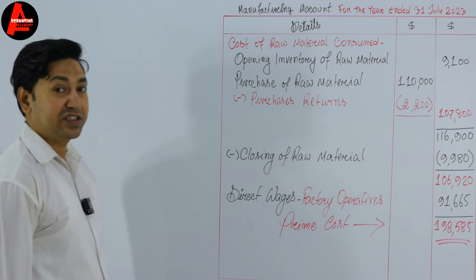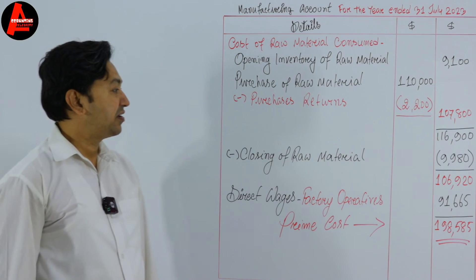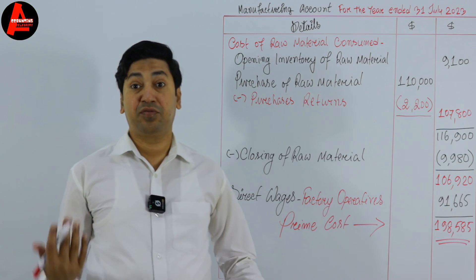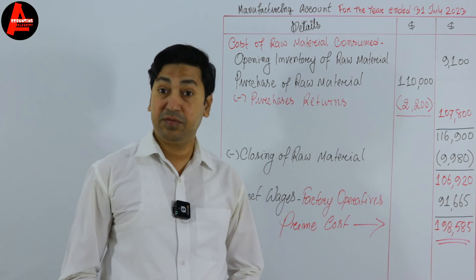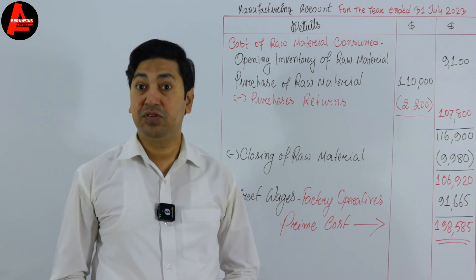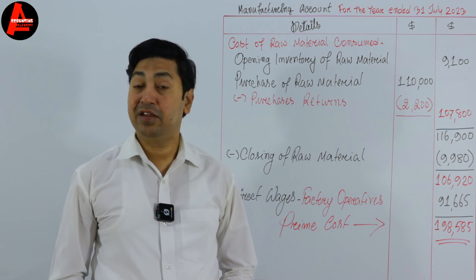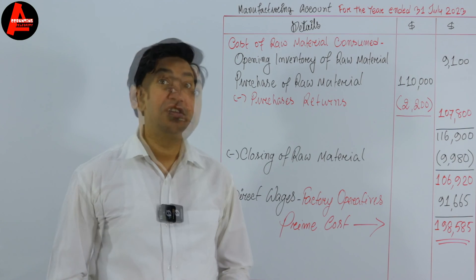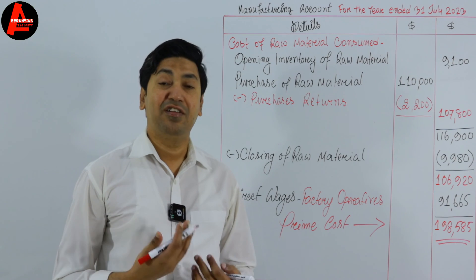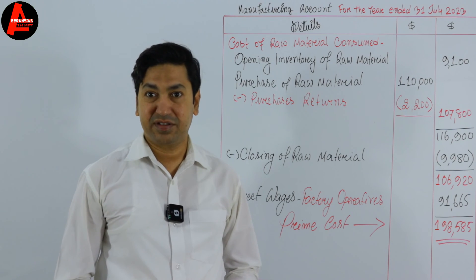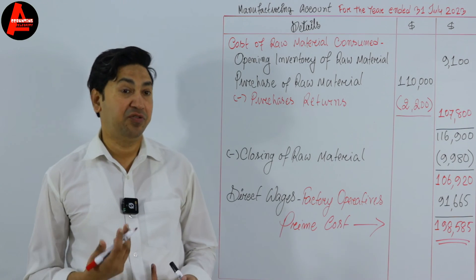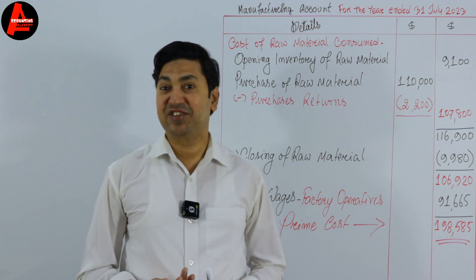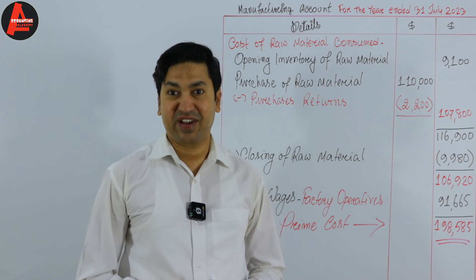This is not complicated — you just need to remember: first calculate cost of raw materials consumed, then add factory operatives' wages to get prime cost. In the next tutorial, we will see how to figure out cost of production.